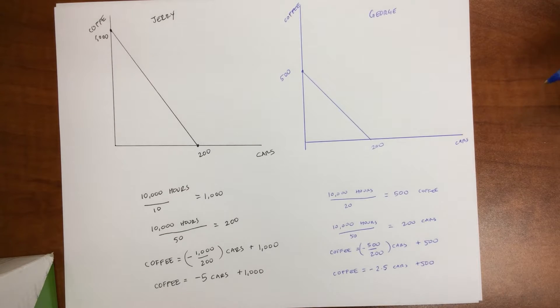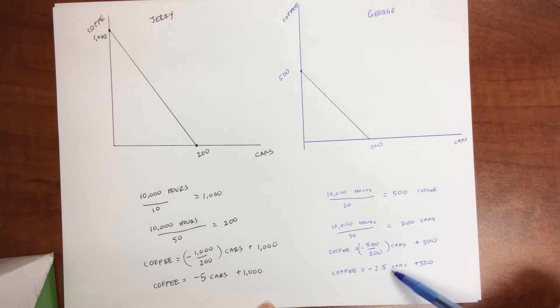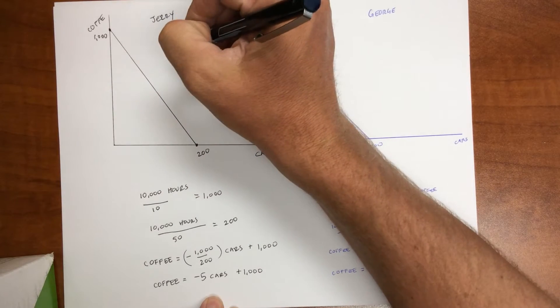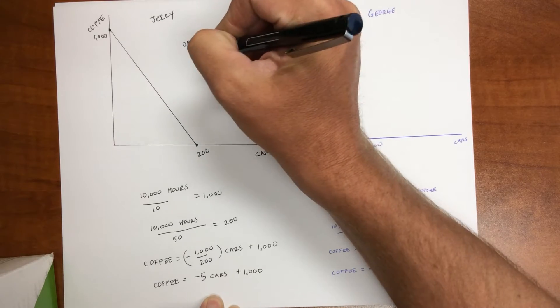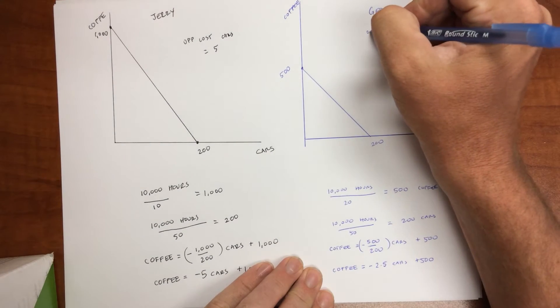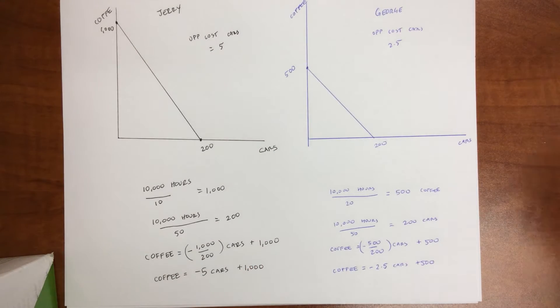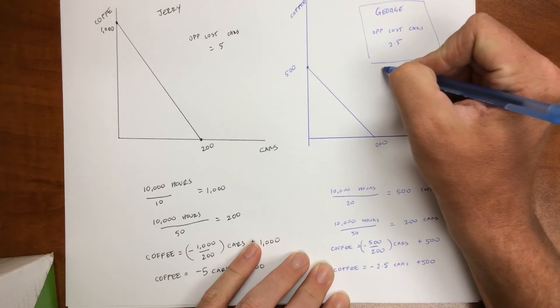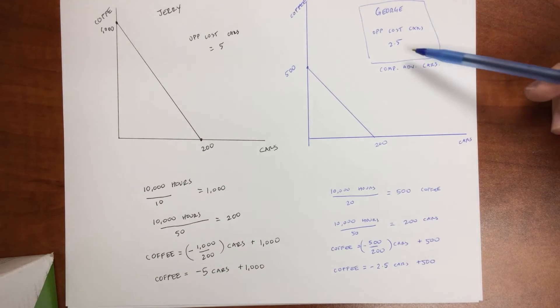And now the question is, what's the opportunity cost for George? So for every car that George produces, it's going to cost him 2.5 cups of coffee. The opportunity cost for Jerry is 5. So let's write this. Opportunity cost, and this is in terms of cars, is equal to 5. But for George, the opportunity cost for cars is 2.5. So who can produce cars more efficiently? Who has the comparative advantage in producing cars? Well, in this case, George is the winner. So George has the comparative advantage in cars because he can produce cars at a lower cost.